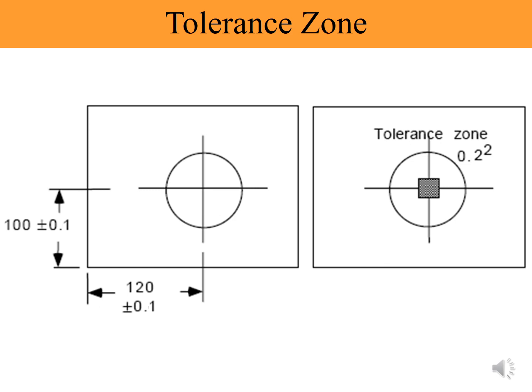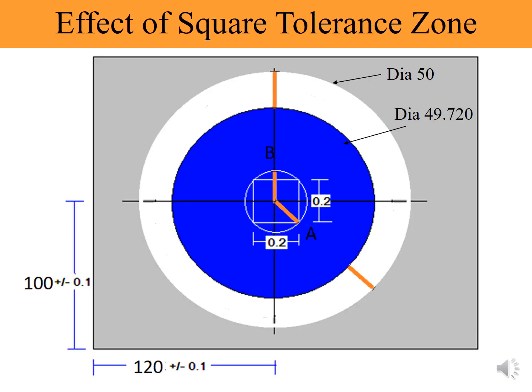On this slide you see a part having a hole diameter 50 millimeters located at nominal distances of 120 millimeters in x-axis and 100 millimeters in y-axis. Also, a pin of diameter 49.720 millimeters is located exactly at nominal values. This is a hypothetical case to understand true position in a better way.